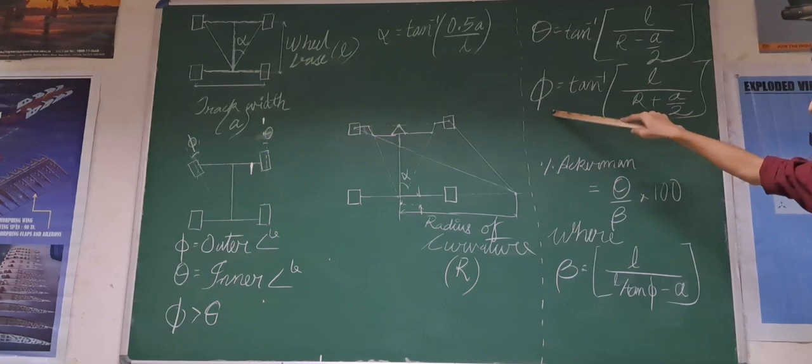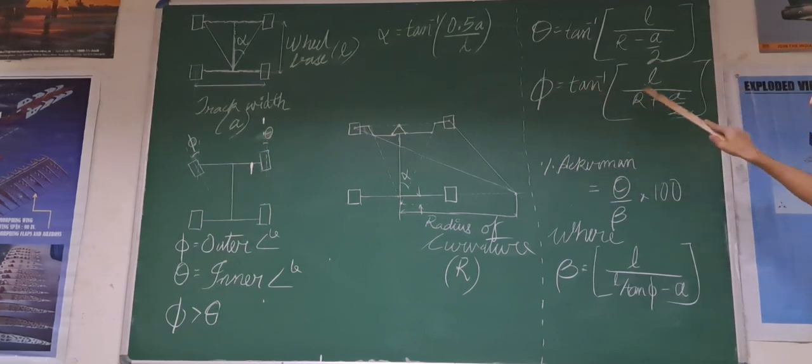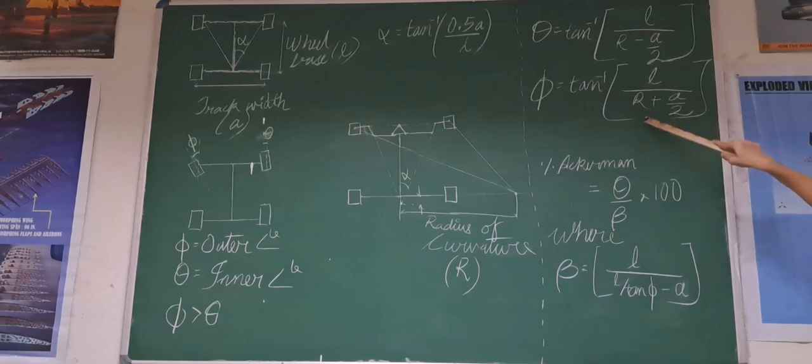Similarly, in the angle of inner wheel, we have the formula tan inverse of wheelbase divided by radius of curvature plus half of track wheel. The difference here being the minus and the plus.